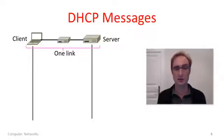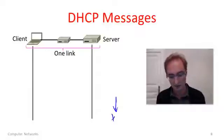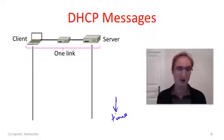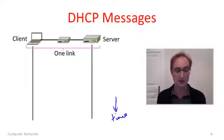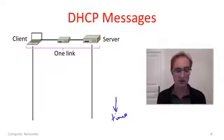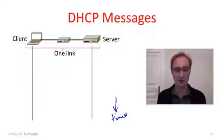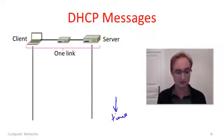Now that we know DHCP uses broadcast, let's talk about the exchange. This is a timeline diagram with time going down the page. We have a line for the client — a computer that's just woken up — and another for the DHCP server. These need to be within one IP hop of one another, on the same network or the same logical link. You could have switches in between them, which is still logically one link — one IP hop of connectivity across a series of links joined by switches.